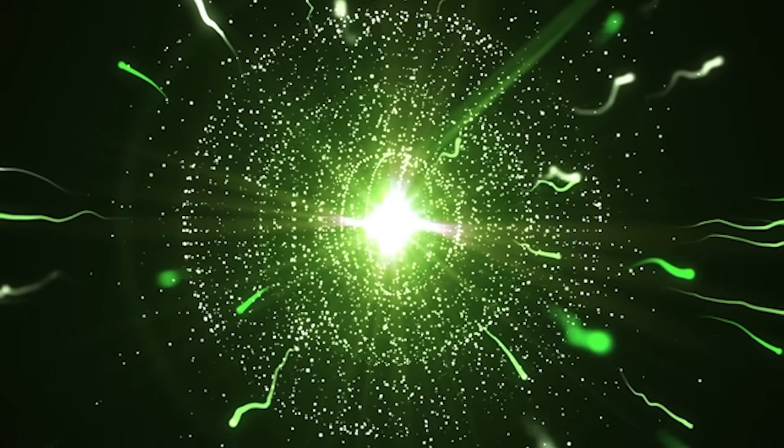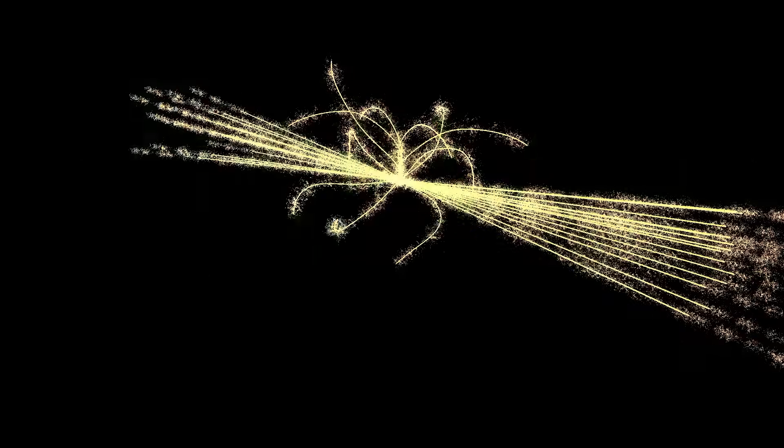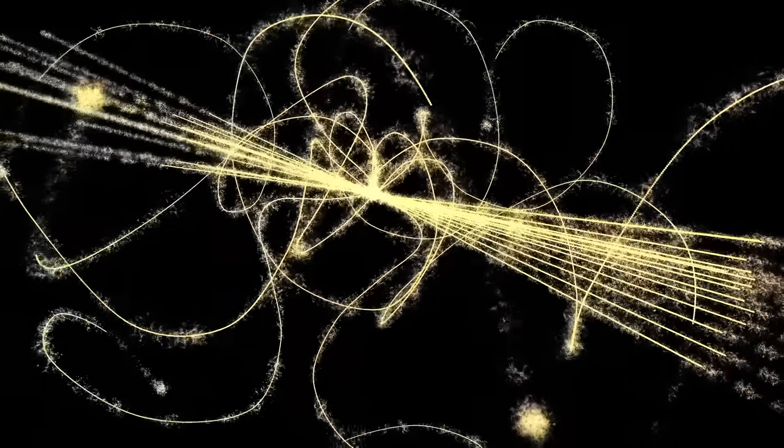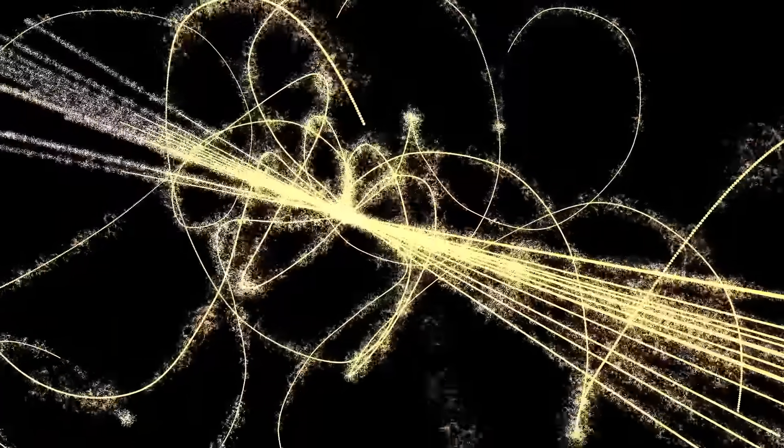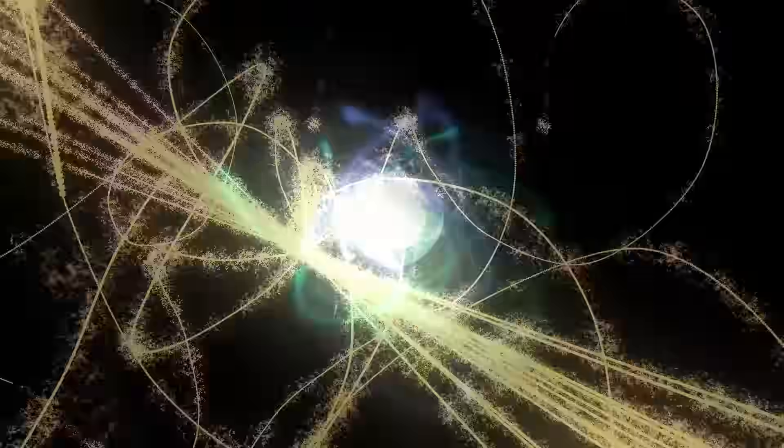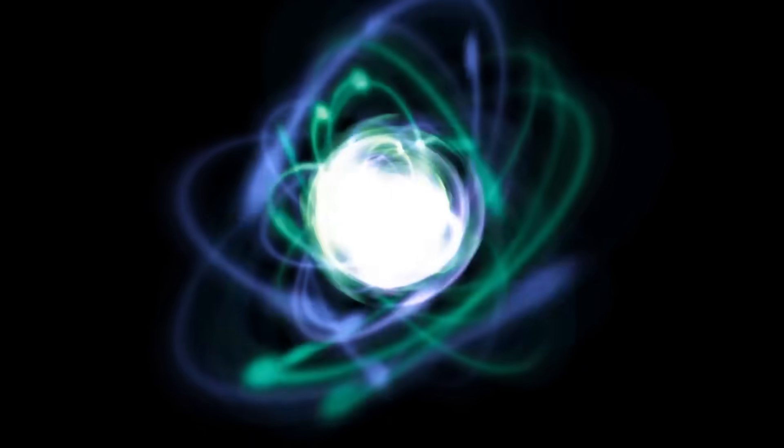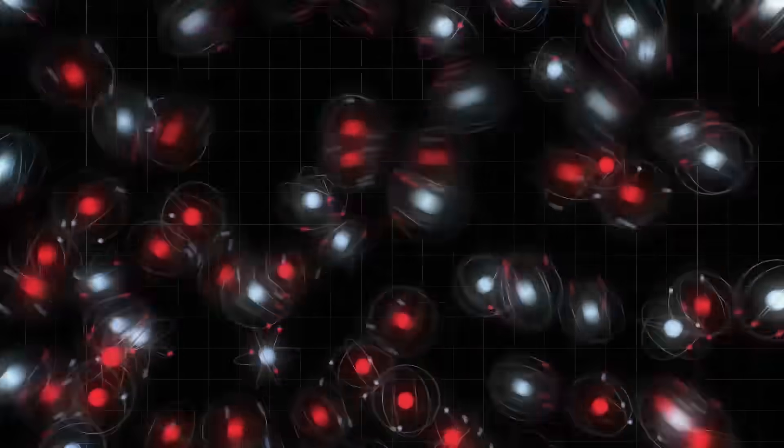When they break free, they start getting excited and emit photons—small particles of light which illuminate everything. As this happens, more electrons break free, atoms bump into each other, creating almost like a chain reaction.